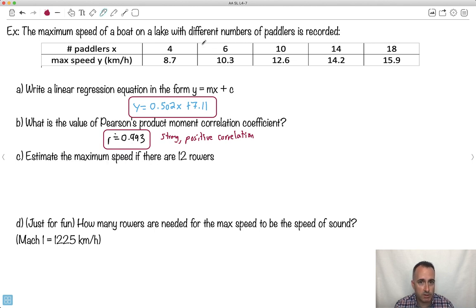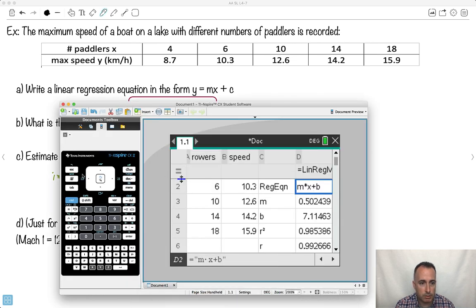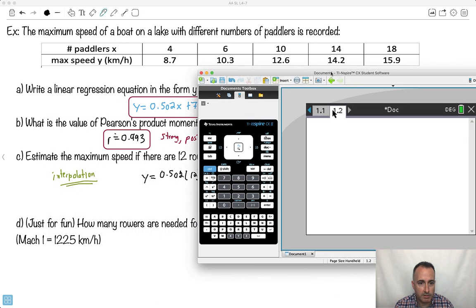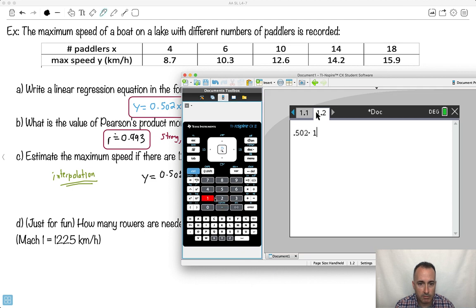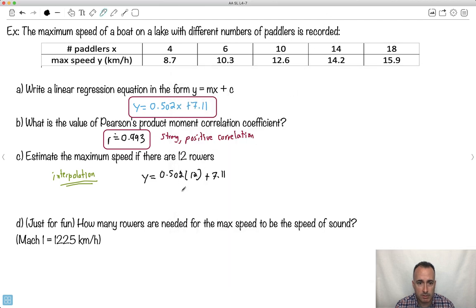Now, you often have to then use it to predict something. So let's do the maximum speed. If there's 12, do you notice 12 wasn't one of the things? In other words, what we're doing here, we're doing an interpolation. So we're guessing a value that's still within the data here. So this is an interpolation. So I want 12 rowers. What do I do? I use my equation. Remember, y is the speed. So I want to know y when I already know x. I'm going to say 0.502 times 12 plus 7.11. I can see from this the speed should be about 13.1. So it should be about 13.1 kilometers per hour. Does it seem reasonable? Yeah, somewhere in between these two numbers. So it seems to be reasonable. That's a good interpolation.